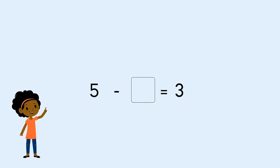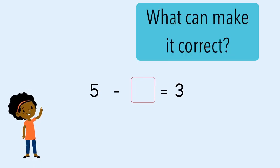Again, we've got our number sentence: five take away something equals three. We already know about open sentences. We want to put something in the box to make it correct.